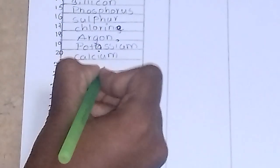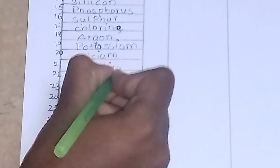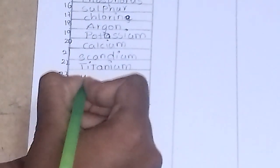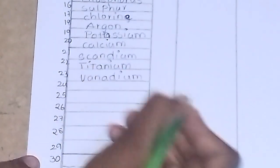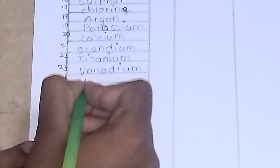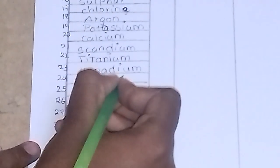The 21st is scandium. The 22nd is titanium. The 23rd is vanadium. The 24th is chromium.